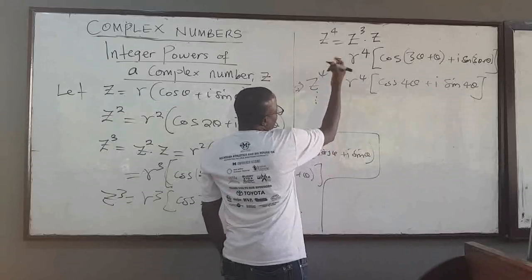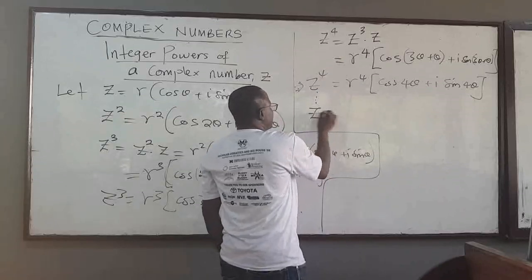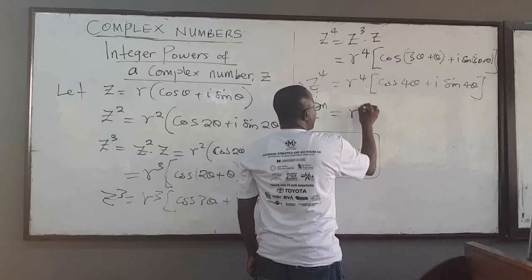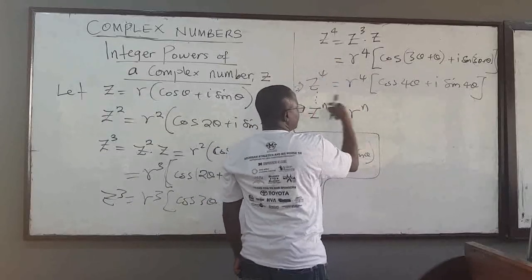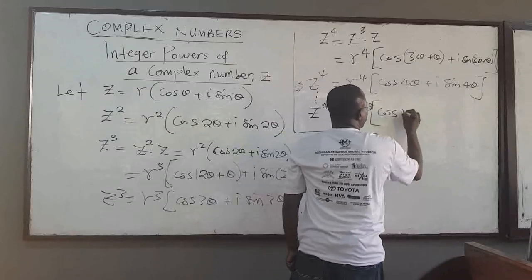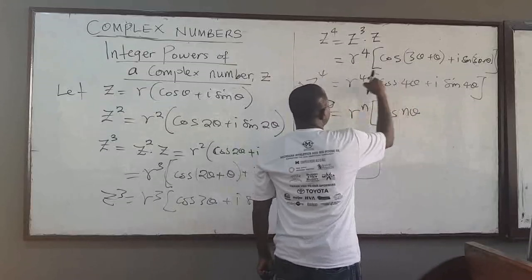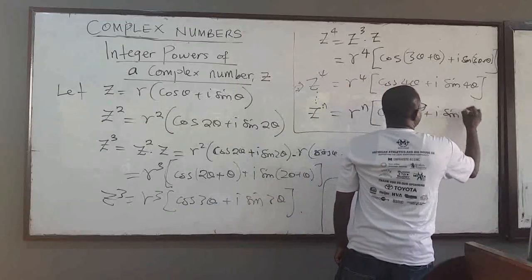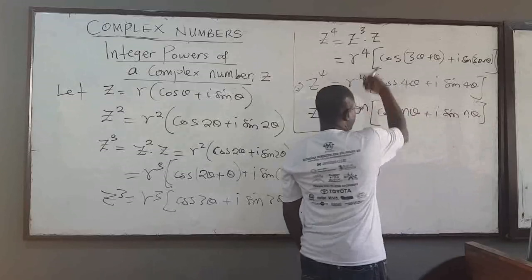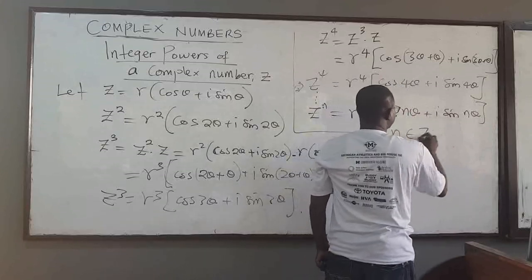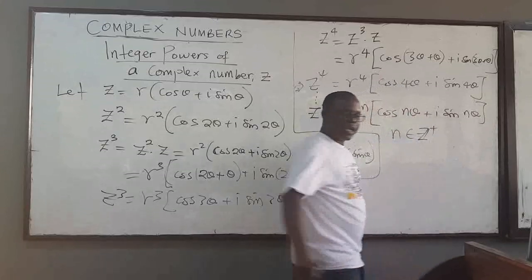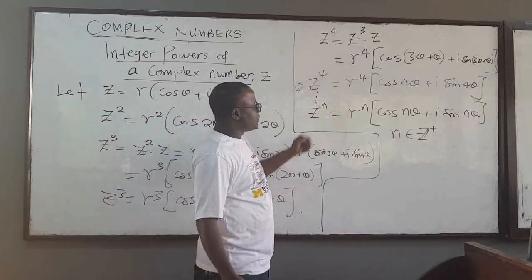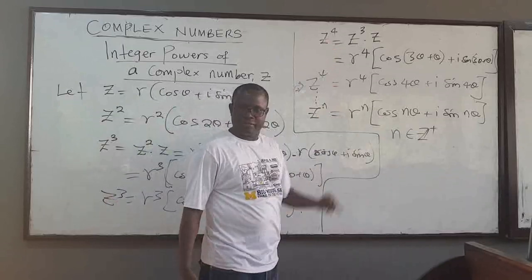If you assume we're doing it for all positive integers, you can see that z^n = r^n (cos nθ + i sin nθ). We have only shown it for n being a positive integer. So for a positive integer, you can see from this development that the formula holds.